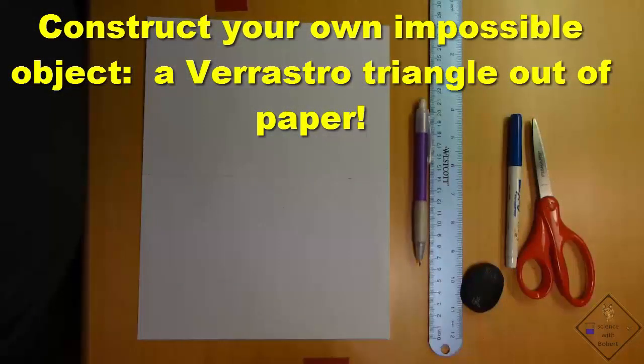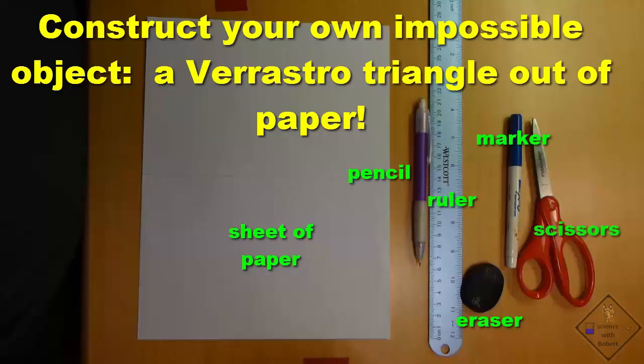Don't have any Legos? No problem. Grab a sheet of paper, pencil, ruler, eraser, marker, and a scissors, and Dr. Smith will show you how to make a Varastro impossible triangle.